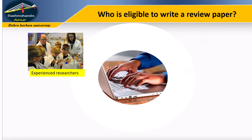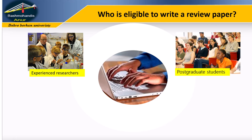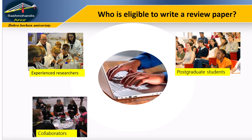Postgraduate students, such as PhD students or postdoctoral researchers who have conducted extensive research in a specific area, may write review papers under the guidance of their supervisors. Collaborators — a group of researchers with complementary expertise — can also collaborate to write a comprehensive review paper, bringing together their collective knowledge and perspectives.